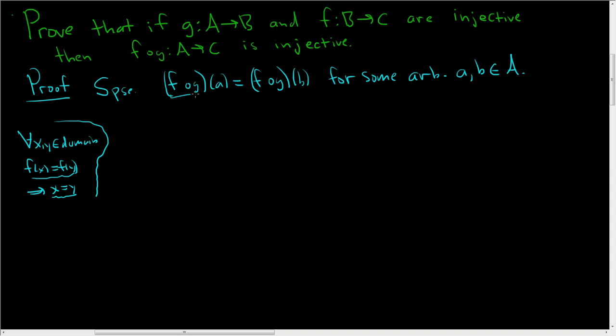Now f∘g of a, that means f of g of a by definition of composition. Likewise, f∘g of b means f of g of b by definition of composition.